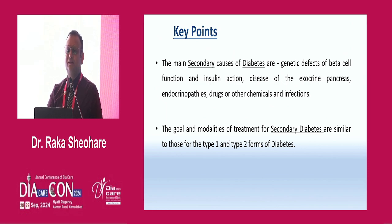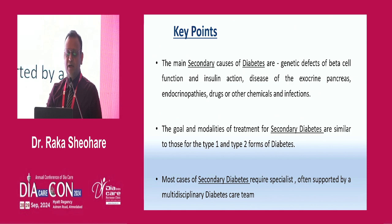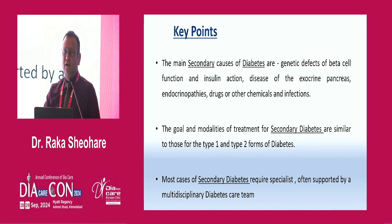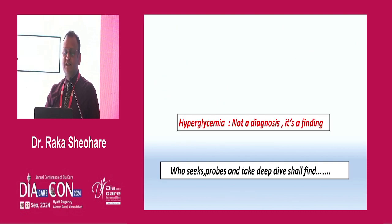We need to manage secondary diabetes similarly, with drugs and insulin as indicated. Most cases require specialists, often supported by a multidisciplinary team — send the patient to a diabetic endocrinologist, a gynecologist, or an oncologist as needed, because this is a team approach. We need to offer the patient holistic care, and that is only possible when we have a clinical clue. Hyperglycemia is not a diagnosis — it's a finding. Whoever seeks, probes, and takes a deep dive shall find the answer.